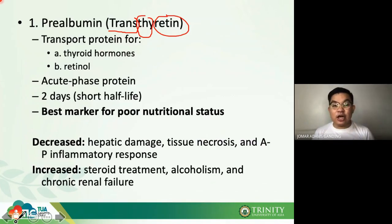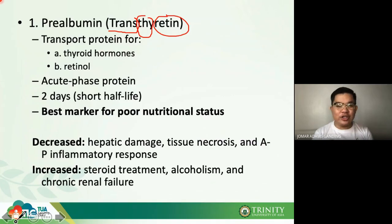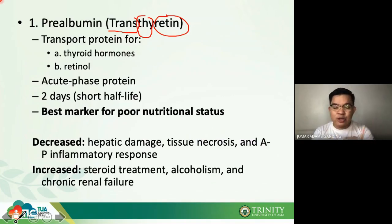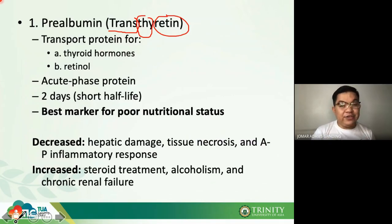Prealbumin is an acute phase reactant protein with a short two-day half-life. Take note: it is the best marker for poor nutritional status. Decreased levels are seen in hepatic damage, tissue necrosis, and inflammation. It is a negative acute phase reactant.